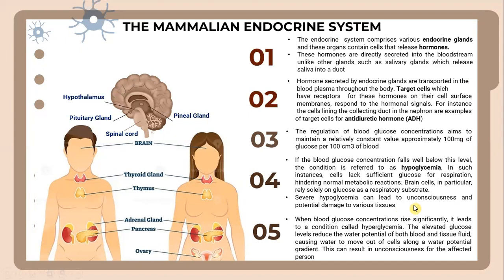When blood glucose concentration rises significantly, it leads to a condition called hyperglycemia. The elevated glucose levels reduce the water potential of both blood and tissue fluid, causing water to move out of cells along a water potential gradient. This can result in unconsciousness for the affected person.